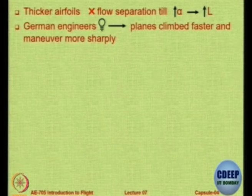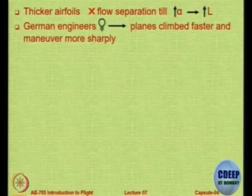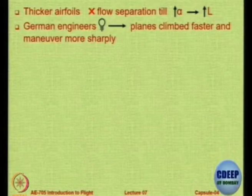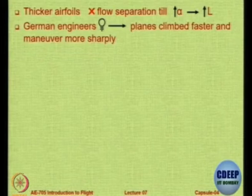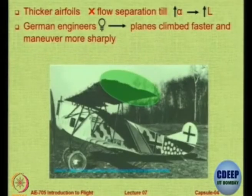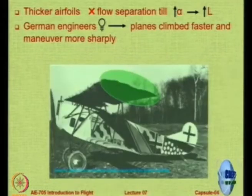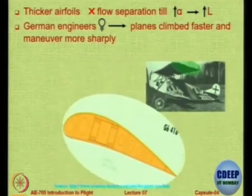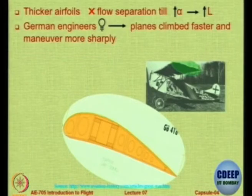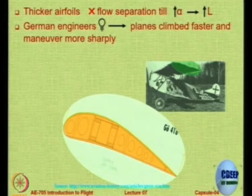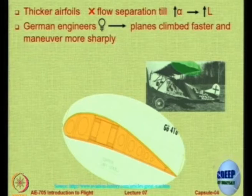There is a very interesting story about how the Allied forces realized this. They captured some aircraft during the war from the Germans, and when they captured the aircraft they found it had very thick aerofoils and still was able to defeat the Allied aircraft in combat. This is one example — the Göttingen Aerofoil G0418. A lot of research was happening in Germany in Göttingen using wind tunnels, and even today that place is a very good place to go for wind tunnel testing. They still have preserved their wind tunnels, and you can see this is a thick aerofoil.